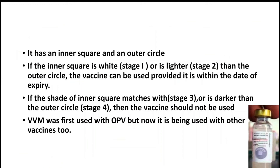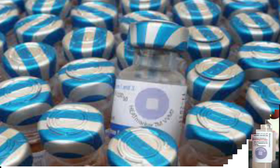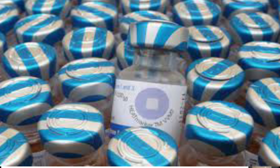The vaccine vial monitor was first used with OPV — oral polio vaccine — and now it is used with other vaccines like hepatitis B.